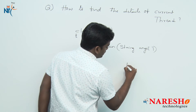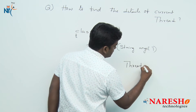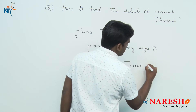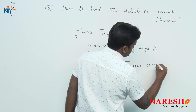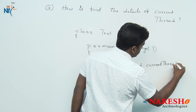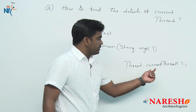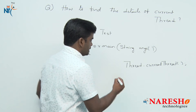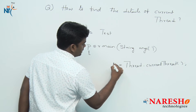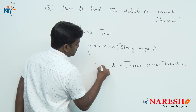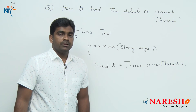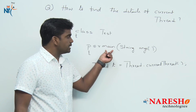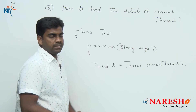Here it is — in the Thread class a static method is there, and we access static methods using the class name. The method name is currentThread(). Whenever we call currentThread(), being a static method called on the Thread class, it will give the details of the current thread. The return type is Thread class type, so it will return the current thread information — if the current thread is the main thread, now it is very easy.